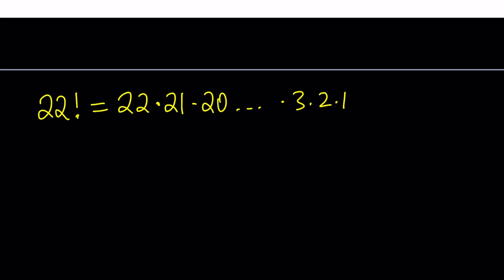3, 2, and 1. So there's going to be 22 factors, basically a product of consecutive integers.